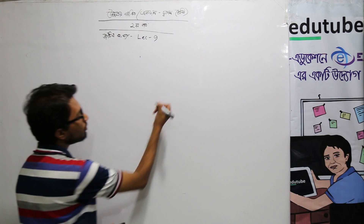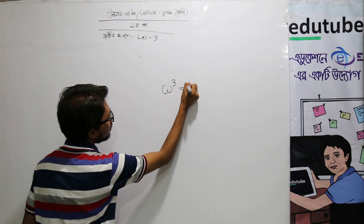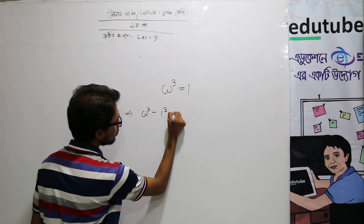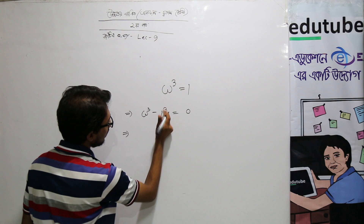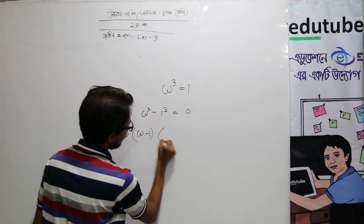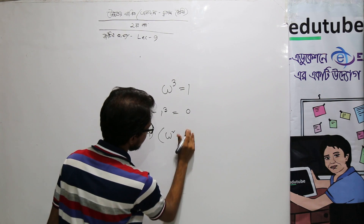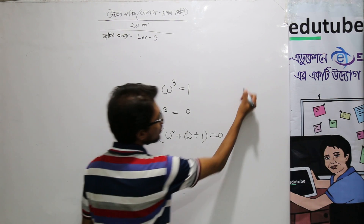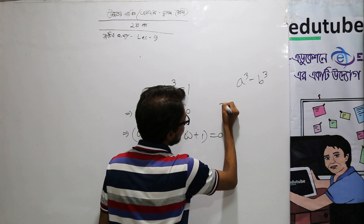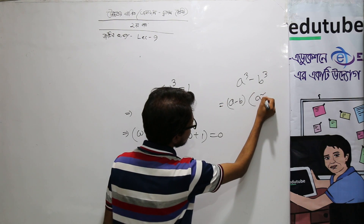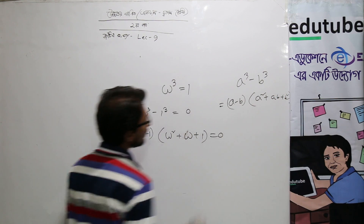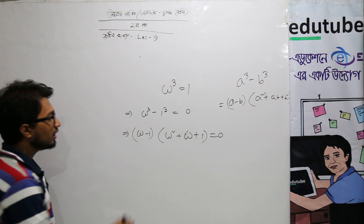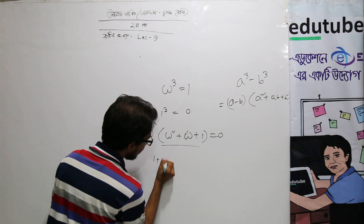All things like omega — we know that omega cube equals to 1, so we can write omega cube minus 1 equals to 0. We can write omega minus 1 equals a squared plus ab plus b squared equals to 0. So we can write a cubed minus b cubed equals to a minus b into a squared plus ab plus b squared.